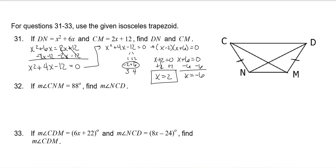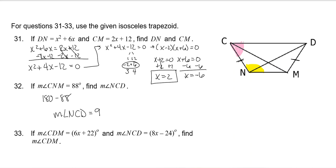Angles CMD and NCD are supplementary, so 180 minus 88 gives the measure of angle NCD as 92 degrees.